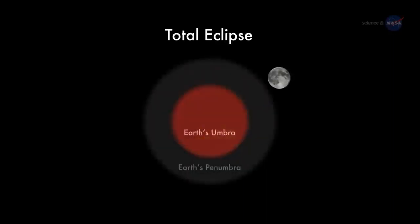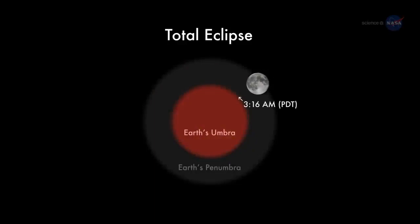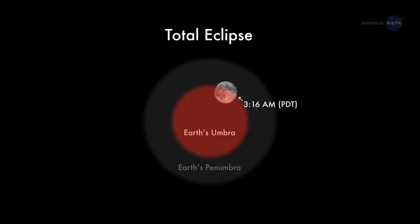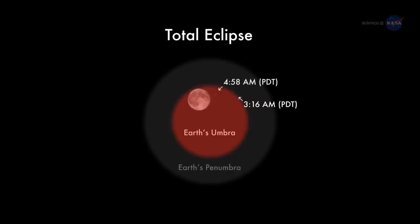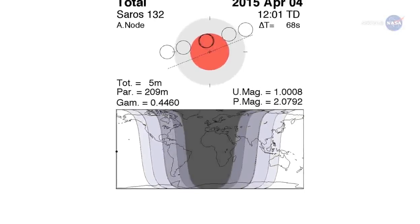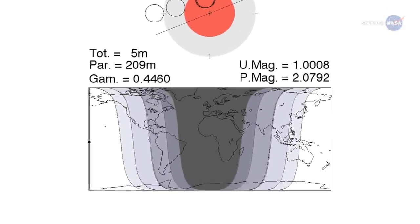The action begins at 3:16 a.m. Pacific Daylight Time on the morning of April 4th, when the edge of the Moon first enters the amber core of Earth's shadow. For the next hour and 45 minutes, Earth's shadow will move across the lunar disk, ultimately covering the entire Moon at 4:58 a.m. Pacific. East of the Mississippi River, the eclipse will be interrupted by sunrise.